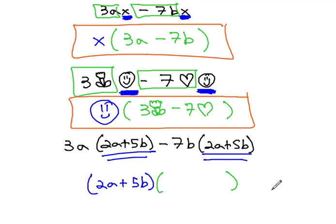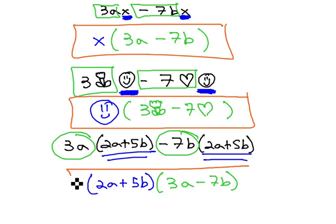What fills in the remaining factor is what's left after the (2a plus 5b)'s have been divided out. That would be 3a minus 7b, and now this expression is completely factored.